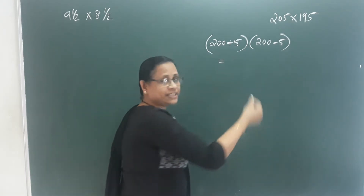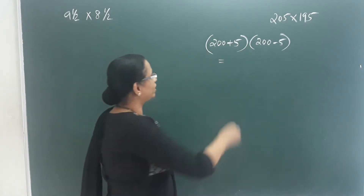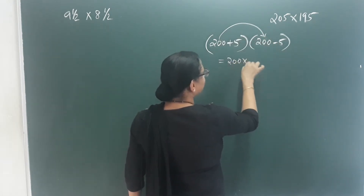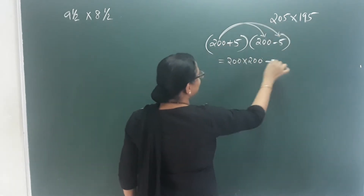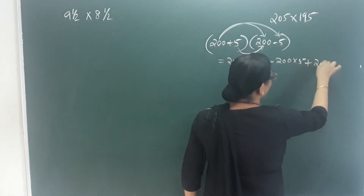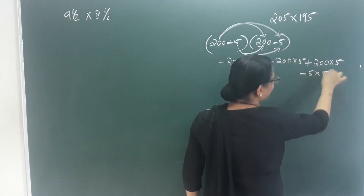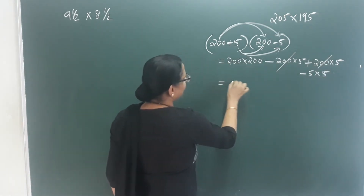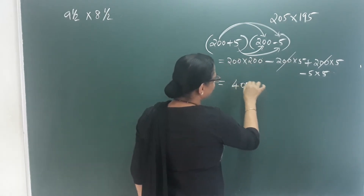We are going to apply a square minus b square. Here comes a square minus b square. These two are multiplied together. Then 200 square — 2 into 2 is 4. How many zeros do we have? 4 zeros.